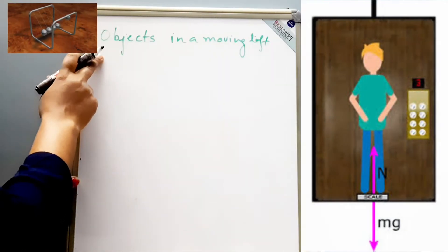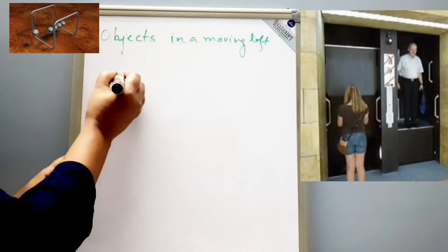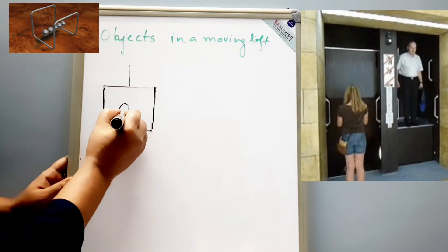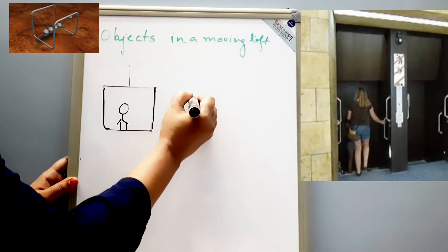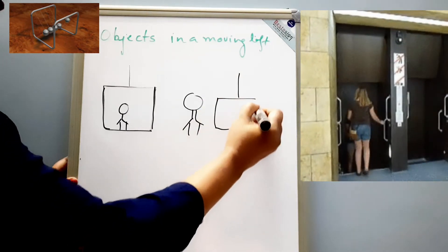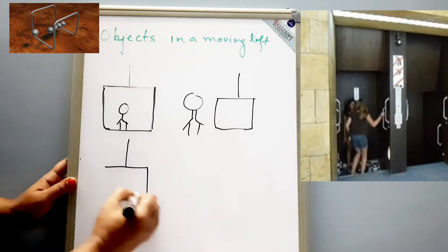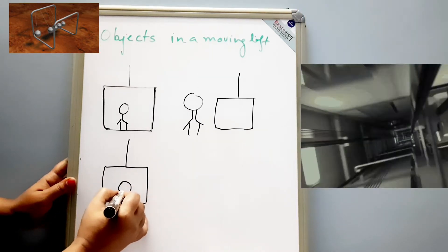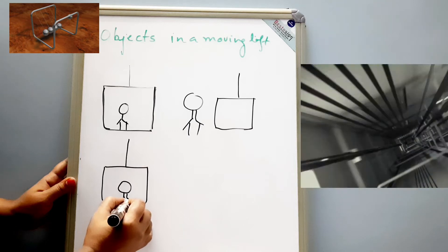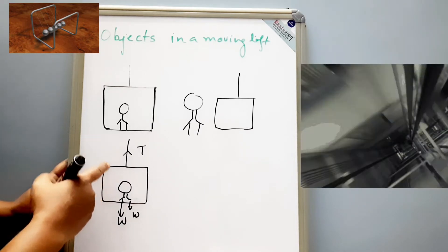Now we are going to see how an object behaves and what kinds of forces act on it when it is in a moving lift. We will understand this with the help of a diagram. This is our lift with a person inside. We will also take them separately to see what forces they experience — a free body diagram for the lift and the person separately. When we see the free body diagram for the lift, the lift will be under three forces: the weight of the lift, the weight of the person, and the tension force of the cable.